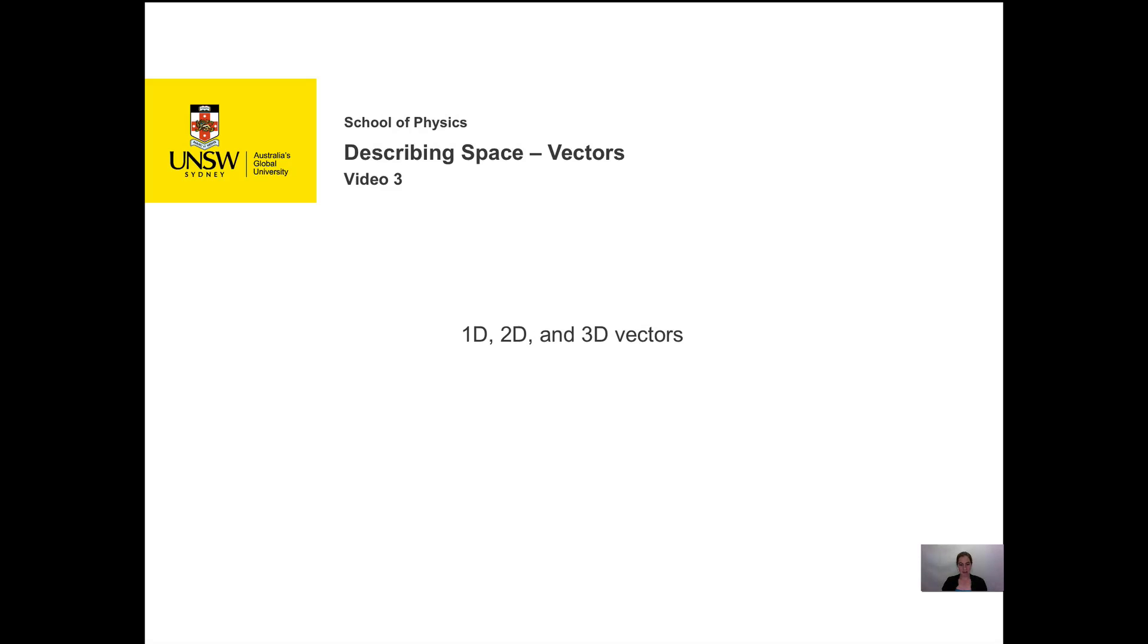So the aim when describing a vector is to allow somebody else to redraw exactly the same vector. And in order to do this, we need to know three things: the vector starting point or the origin, the vector magnitude and direction. So the focus of this video will be on the calculation of the vector magnitude and direction in all dimensions.